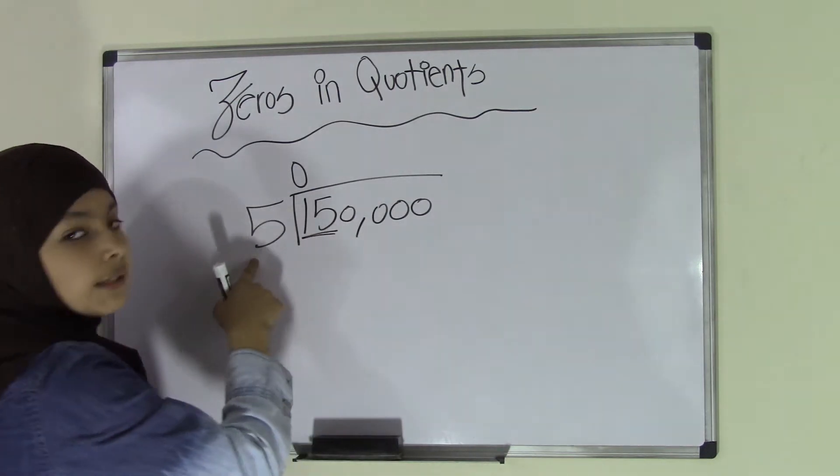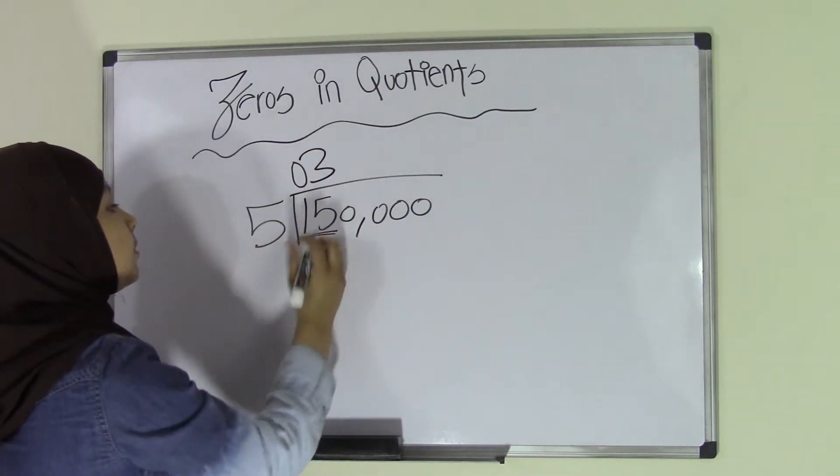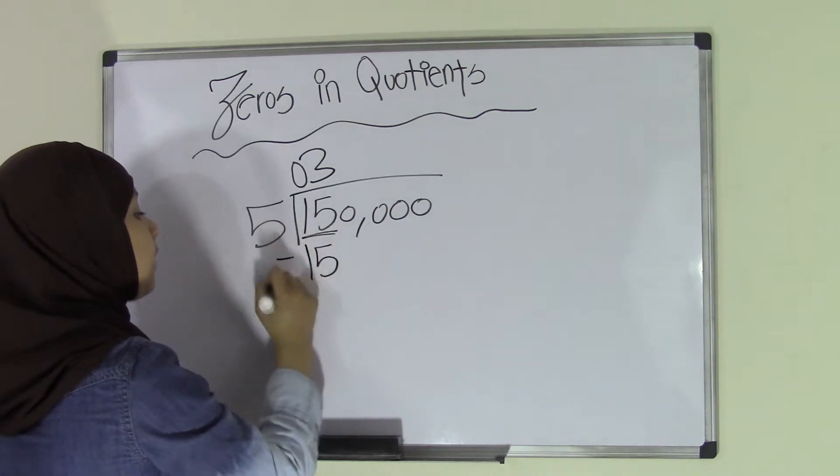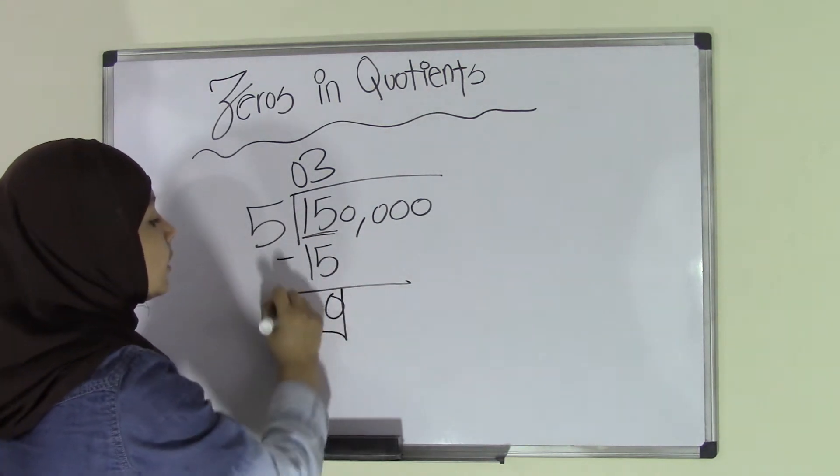So 15, 5 goes into 15 how many times? 3 times. So 5 times 3 is 15. So that will become a 0. So here we can separate this one.